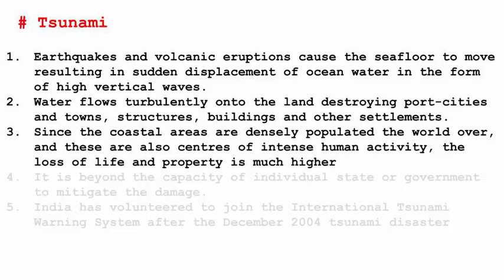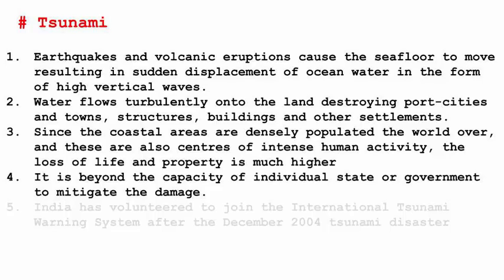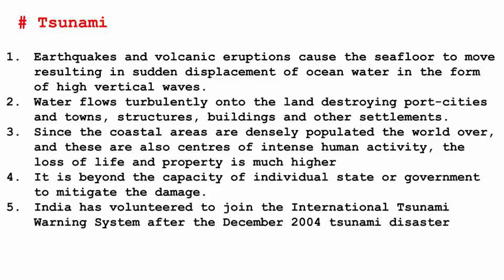Coastal areas are densely populated because a lot of trade takes place and ships can come easily for export and import, so civilization exists in a much denser manner. When a tsunami comes, there is a huge loss of life and property. When there is massive damage, it is beyond the capacity of an individual, state, or government to cope with it. Remember the word 'mitigate' — it means to make less severe or harsh. The government can open shelter care, give free food, and provide facilities, but that cannot guarantee full recovery. India has also volunteered to join the international tsunami warning system after the December 2004 tsunami disaster, recognizing that such problems require cooperation between many countries.